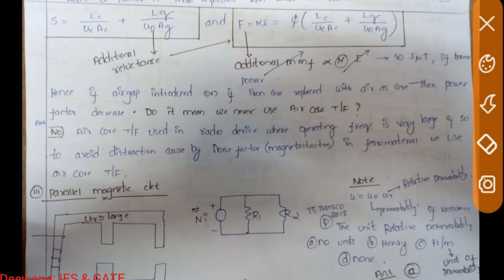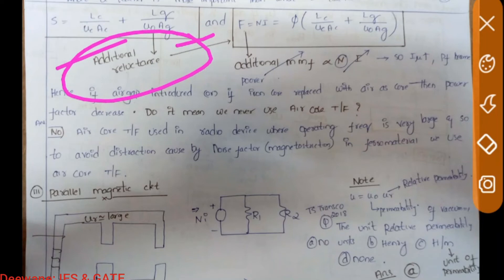Due to the additional reluctance from the air gap, what happens in a transformer? If the laminations are not tightly bolted or riveted, an air gap is introduced between laminations — we use laminations to reduce eddy currents. If the air gap between laminations increases — which is the magnetostriction effect — there is an additional reluctance in the circuit.